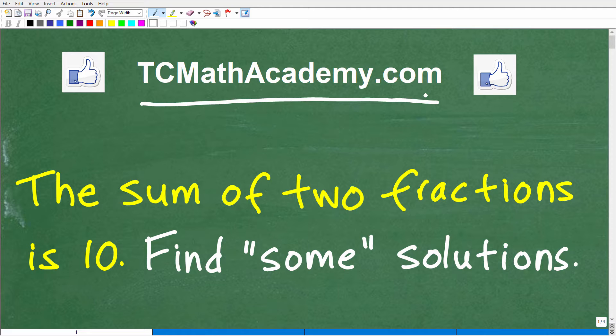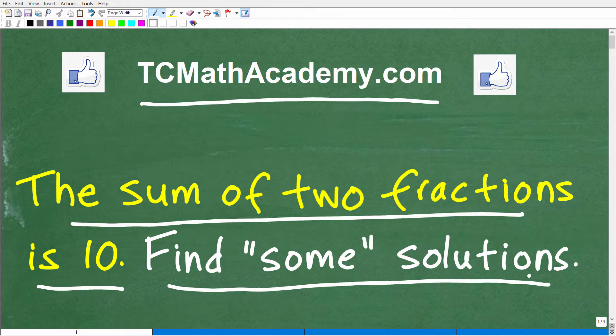So everybody loves fractions, and here is our problem. It says the sum of two fractions is 10, and what we want to do is find some solutions. We want to find pairs of fractions such that when we add those fractions up, we get to 10. But here's the deal. There's actually an infinite amount of answers that can work, so just find some fractions, if you can, that add up to 10.